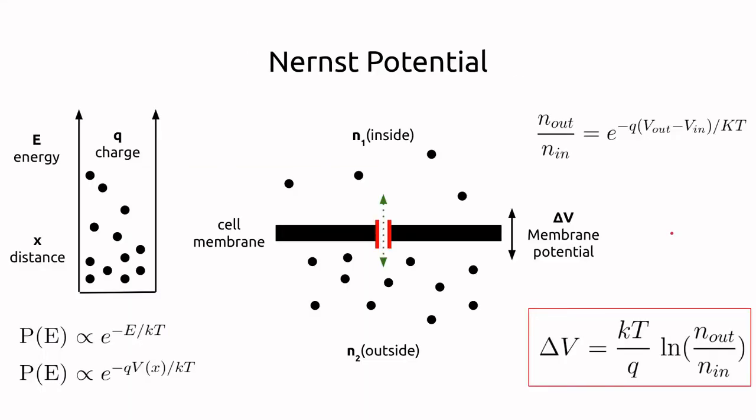To describe the flow of ions through the channels, we are going to start by describing the distribution of charged particles in electrical fields. In neurons, electrical fields arise from different concentrations of ions inside and outside of the cell. From thermodynamics, we know that the probability of a particle existing in a particular energy state is proportional to e raised to the negative energy level, divided by some empirically determined constant k and the temperature T.